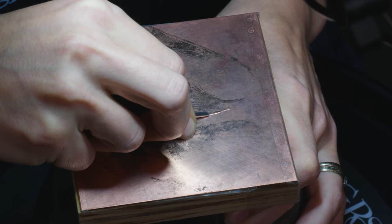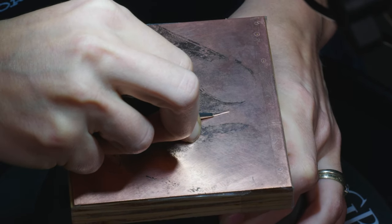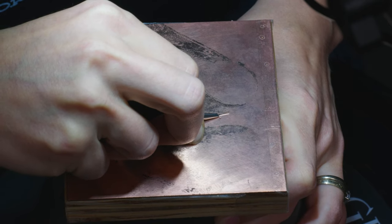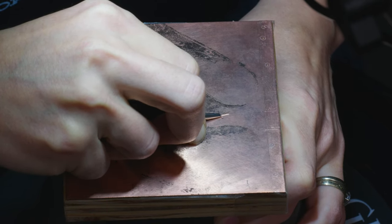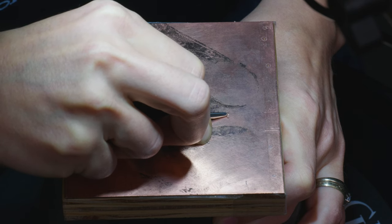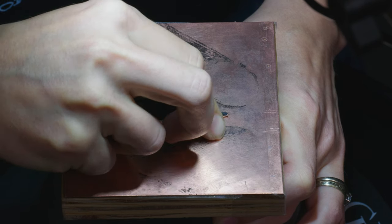And because this is traditionally used for printmaking, you don't necessarily want that mirror polish that you would use for other types of engraving. You would want a lower polish that's going to catch the ink in these cuts.